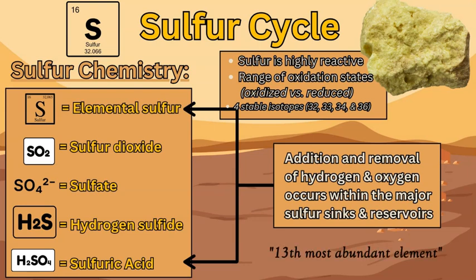The element sulfur has a mass of 32, and it has 16 electrons and 16 protons. It has 23 different isotopes and four stable isotopes: 32, 33, 34, and 36. The main one we look at is sulfur-32, the one on the periodic table. This element is highly reactive — it reacts with other elements to make compounds and mixtures, and it has a range of oxidation states from minus two to plus six, giving eight different states.